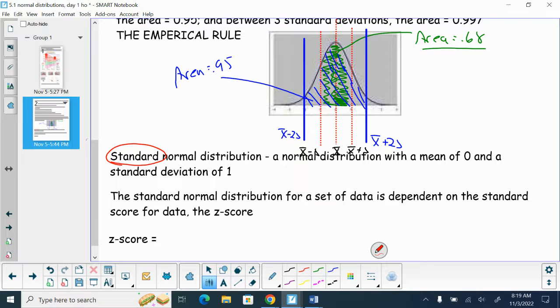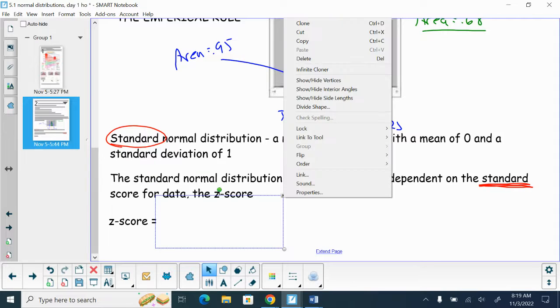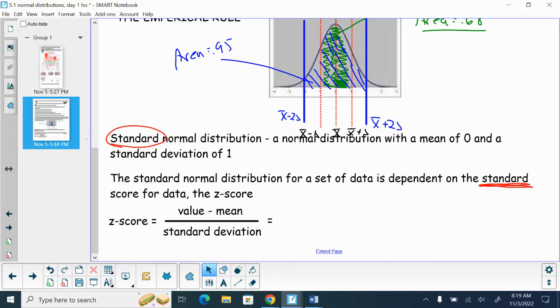Now, when we standardize a value, when we standardize a set of data, we change all of our data to a z-score. Now, z-score is something we didn't do, we haven't done since the second chapter. How we calculate a z-score is we take our value, we subtract off the mean, we divide by the standard deviation. Value minus mean divided by standard deviation. And this standardizes our z-score, which is value minus mean divided by standard deviation.